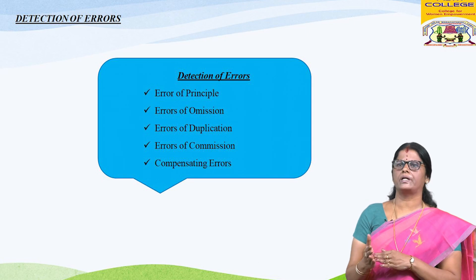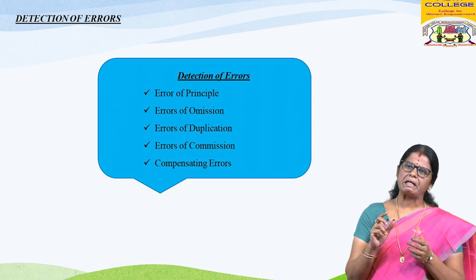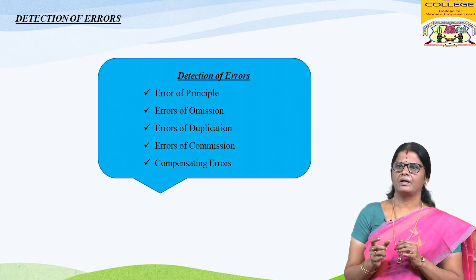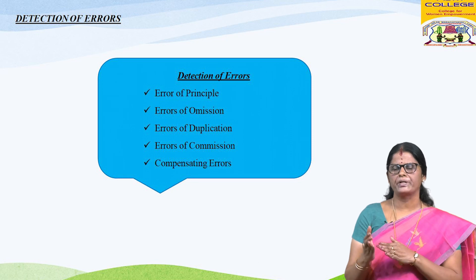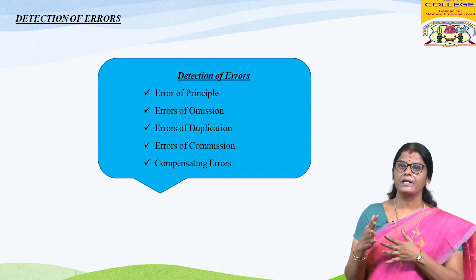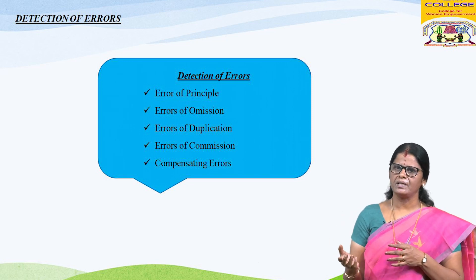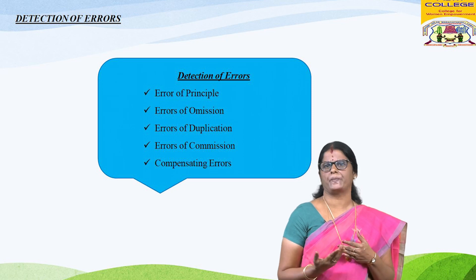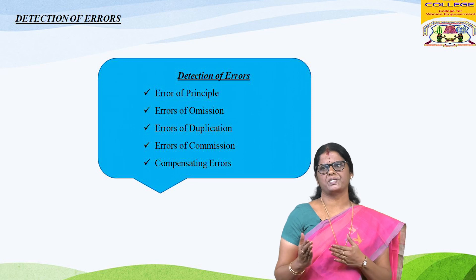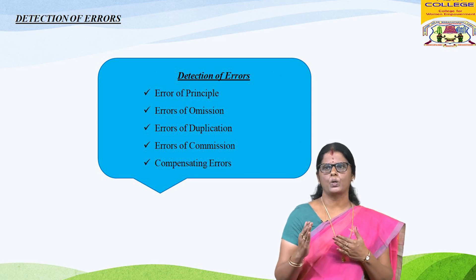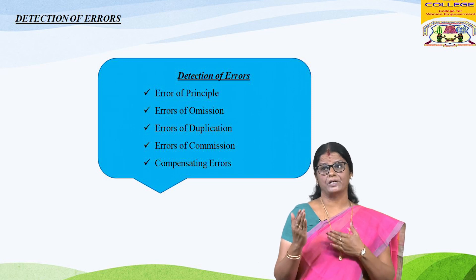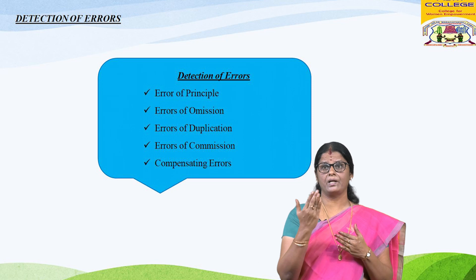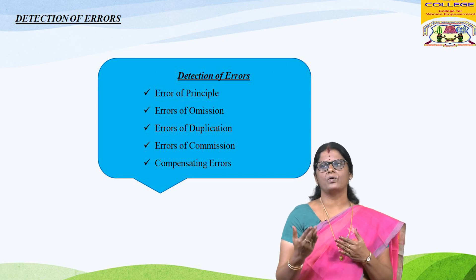Auditors should be very careful about the detection of errors, because manipulation in accounting may also appear as an error, or it may be a result of carelessness on the part of a bookkeeper. Errors may be broadly classified as: error of principle, error of omission, errors of duplication, error of commission, and compensating errors. An error of principle occurs where items of transactions are not recorded according to the principles of accounting. These errors are not traceable from the trial balance and may be committed intentionally to inflate or deflate profit.